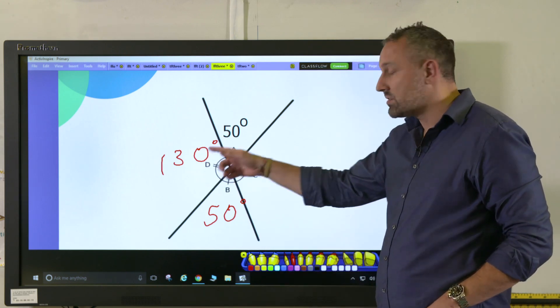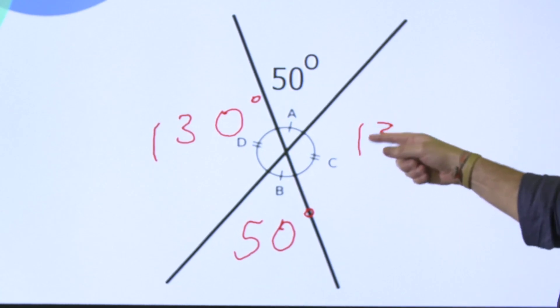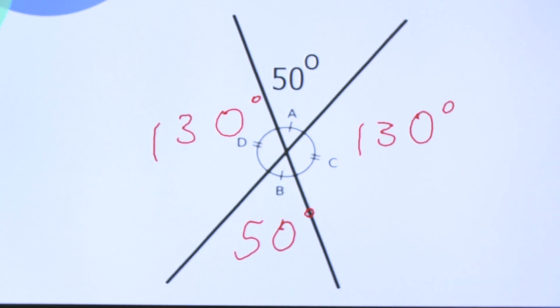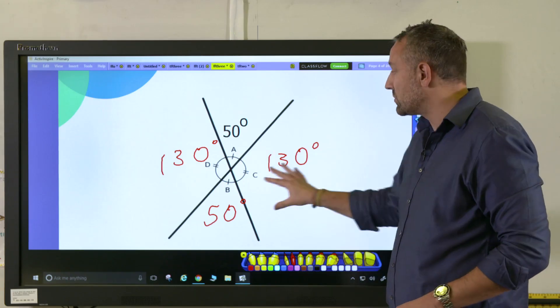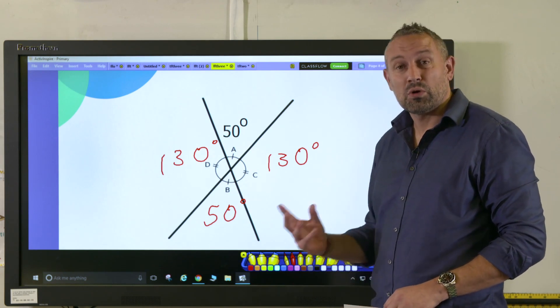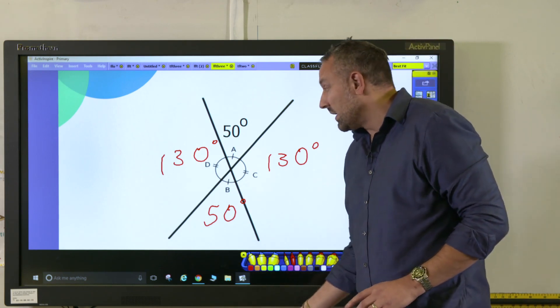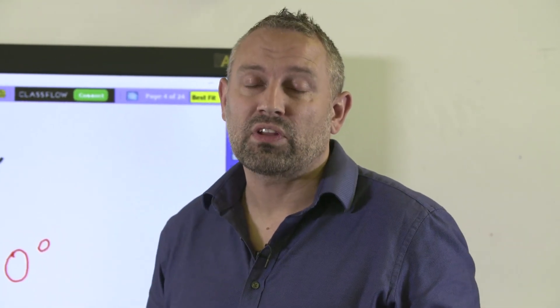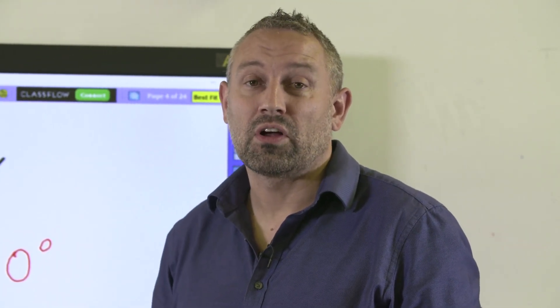If D is 130 degrees, so will C be 130 degrees. The final check is that they could total all of those numbers and they'll get 360 degrees, which is a complete circle. In order for children to access those tricky problems, they have to have that real good grounding of what angles are.